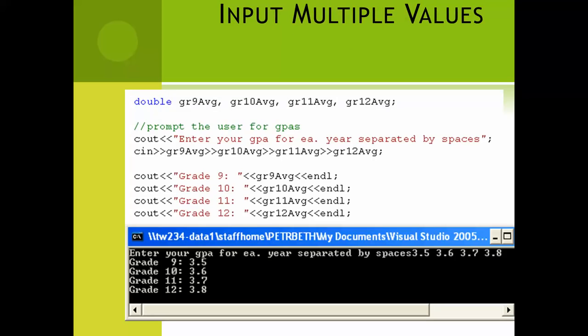If I have multiple values, and it seems natural that the user could enter them, they're related, they want to just enter them all in one big fell swoop, then I can use a cin with several extraction operators to pull them all in. So here I've said, enter your GPA for each year separated by spaces, and then I have one cin and all my variables listed, each separated by extraction operators, and it will grab all those values and just fill the variables in for me, so that I can print them out again down here.